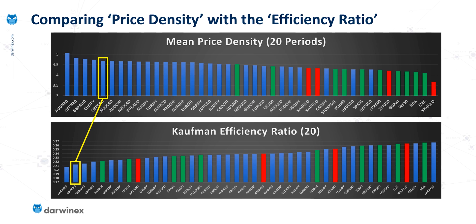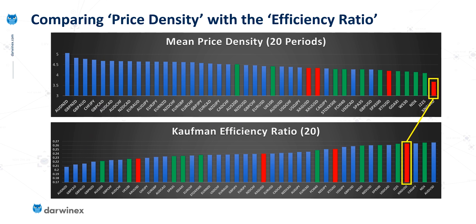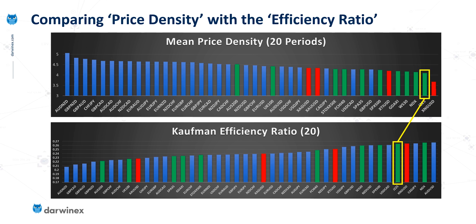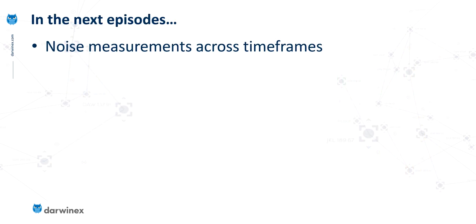Looking at the other end of the spectrum, starting with natural gas — again a little difference, but both place it in the lowest noise quartile. Moving up one, we get to the Japanese Nikkei, and again there's consistency. Next, the NASDAQ, and these are very close together. All of these calculations were performed on the H1 charts. But we're also going to look at how noise is impacted across different timeframes, which will be the subject of the next episode — and you might find some of the results a little bit more surprising.